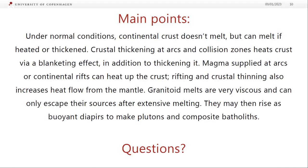So to summarize: normally the continental crust doesn't melt. It can melt if it's heated or thickened. Crustal thickening at arcs and collision zones heats the crust because of this electric blanket effect, and thickening also means the base of the crust is at a higher temperature. Magma supplied at arcs or continental rifts can directly heat up the crust, and rifting can increase heat flow from the mantle by bringing hot asthenospheric mantle closer to the crust. Granitoid melts are very viscous and can only escape the source after high degrees of melting. They may then rise as diapirs to make plutons and batholiths.